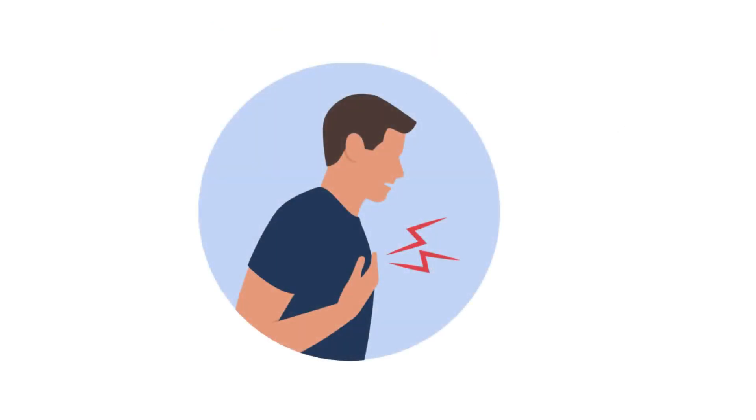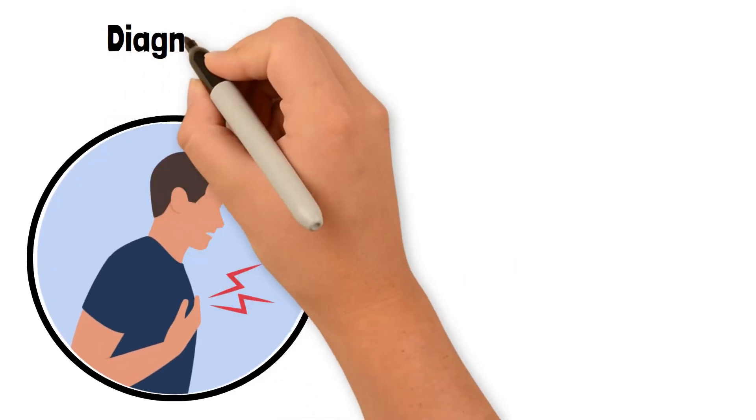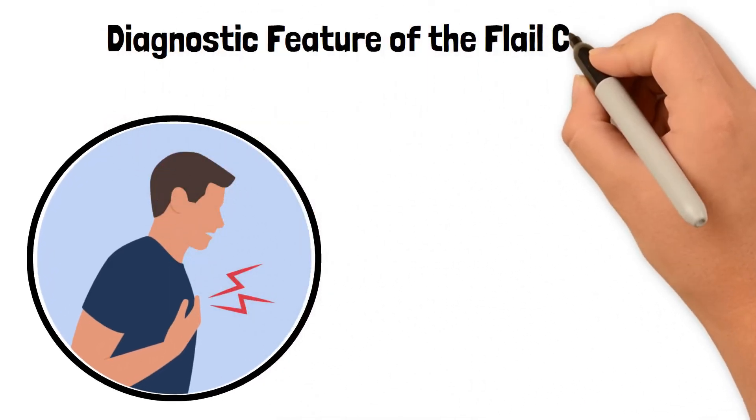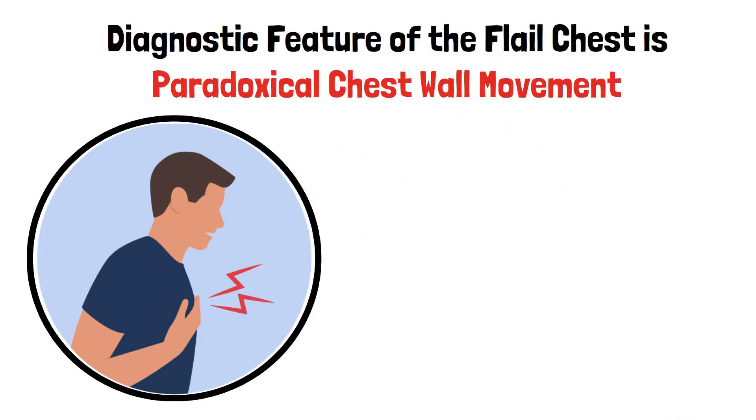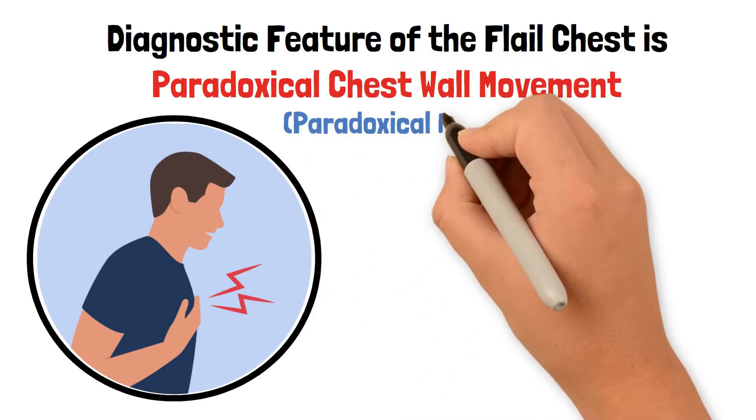Patients with a flail chest often present with severe chest pain and tenderness. A key diagnostic feature of a flail segment is paradoxical chest wall movement, also called paradoxical motion.